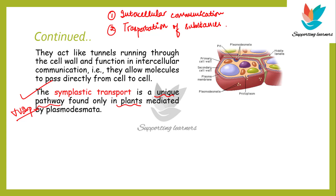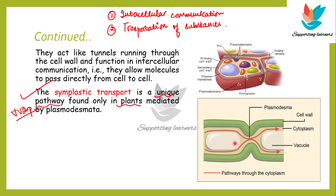Plasmodesmata help in this transport. If we see these two cells which are connected by the plasmodesmata — plasmodysma is singular and plasmodesmata is plural — the cytoplasm inside the cells is not stationary. It is moving, and exchange is happening between the two cells. So when water transport occurs, water basically moves along with the cytoplasm and is transported from one cell to the other cell. This pathway is known as the symplastic pathway.